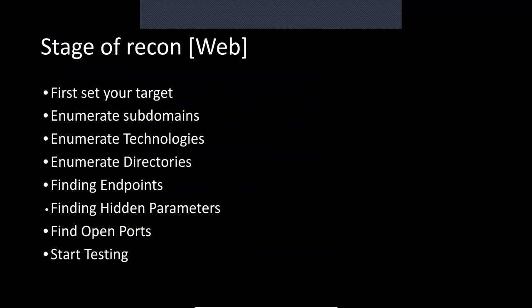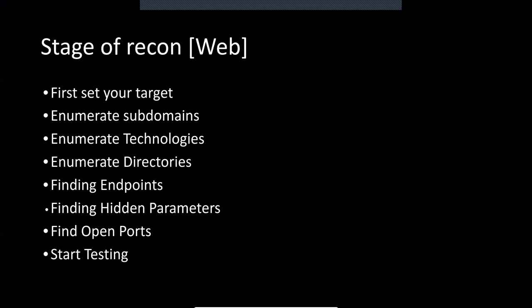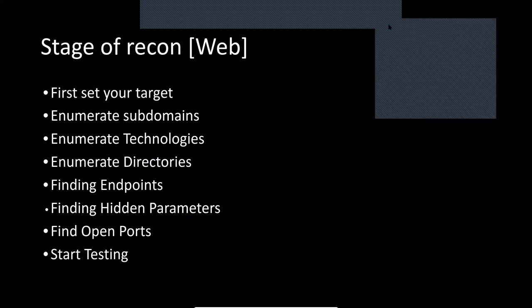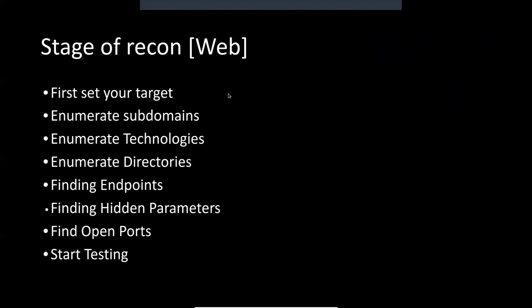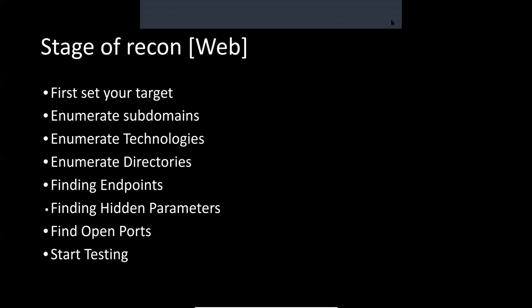What is Recon? The first stage is to select your target. Here we have selected paypal.com because it is an open bug bounty platform. Then comes enumeration of subdomains — I want multiple subdomains from paypal.com, and there are many tools available for subdomain enumeration. After that, identify what technologies are running on that subdomain or domain and how it can be useful. For example, if PHP is running, PHP has known vulnerabilities and we can exploit that.